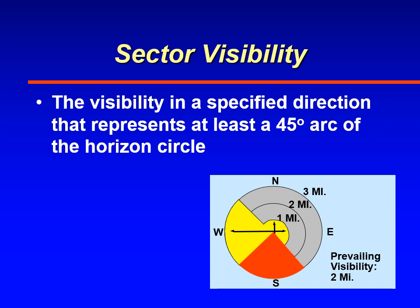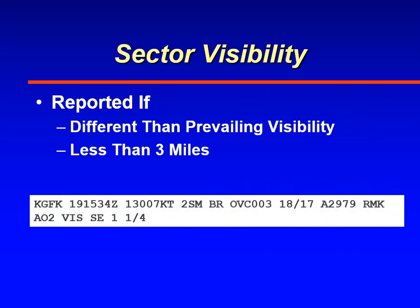If the visibility around the airport is variable, you may see sector visibility. Sector visibility is the visibility through a certain sector, typically a 45-degree arc or more of the horizon circle. It's used when visibility is lower or higher in one region than the prevailing visibility. Sector visibility is reported when the prevailing visibility is less than three miles and the visibility in any one sector is different than the prevailing visibility.